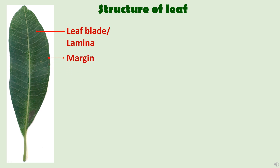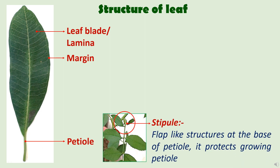The edge of the leaf is called the margin, and the leaf is attached to the main stem through a stalk called the petiole. In some cases, the petiole is absent — such leaves are called sessile leaves. In others, a flap-like structure is present at the base of the petiole called the stipule; the function of the stipule is to protect the growing petiole, and we can easily see stipules in the leaves of a rose plant. The leaf also has a midrib running through its length, which gives rise to little branches of the vascular bundle called veins.